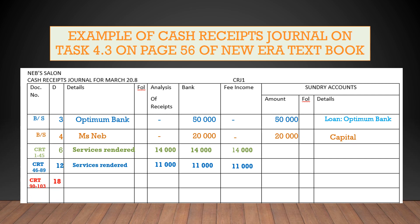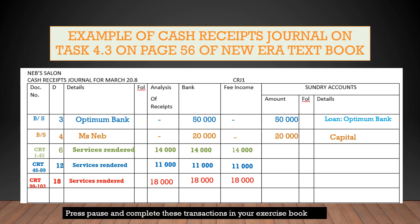On the 18th we also received further cash takings for service fees — this was 18,000 Rand. We enter it into the Cash Receipts Journal and into the Analysis of Receipts because the business handled the cash. The business also deposited the 18,000 Rand into the bank — we write it in the Bank column and indicate it was for fee income. No entries are made in Sundry Accounts.